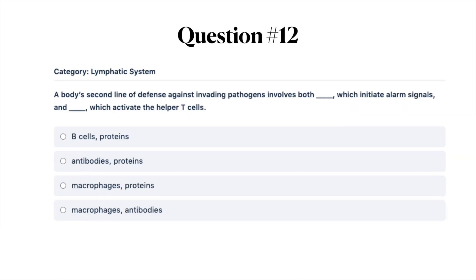Next question: a body's second line of defense against invading pathogens involves both blank, which initiate alarm signals, and blank, which activate the helper T cells. A, B cells and proteins; B, antibodies and proteins; C, macrophages and proteins; or D, macrophages and antibodies.